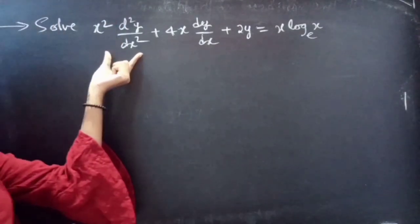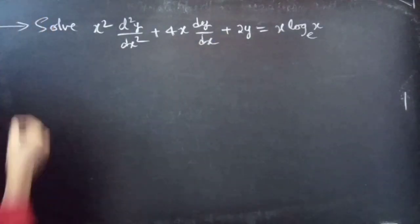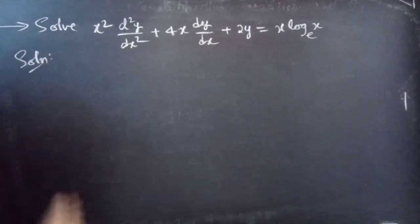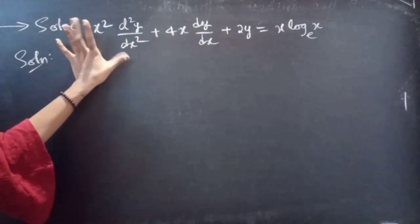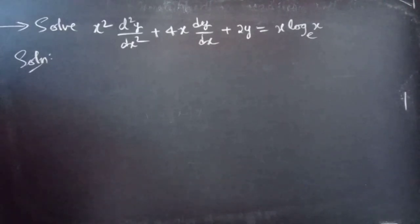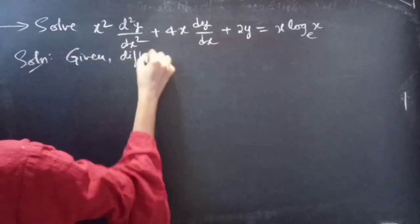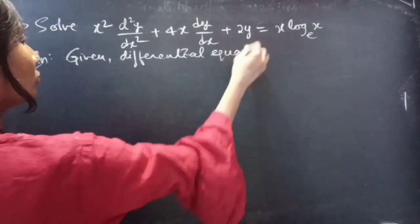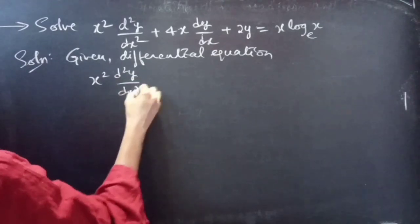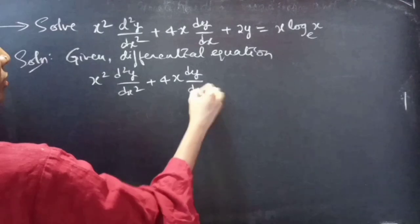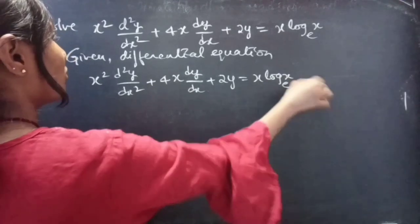Problem: x squared into d²y/dx² plus 4x into dy/dx plus 2y equals x log x to the base e.